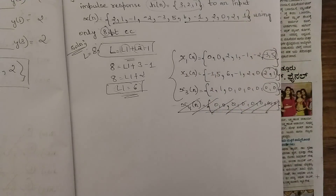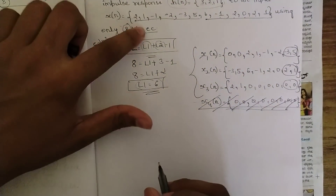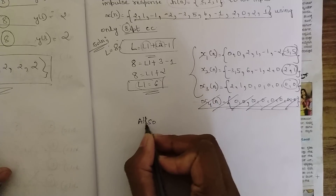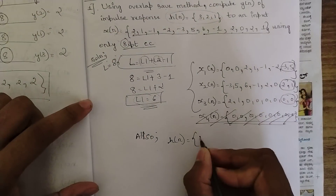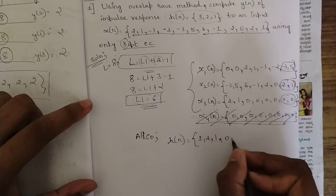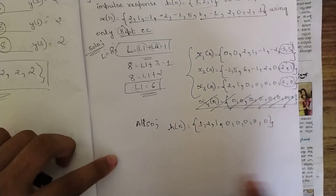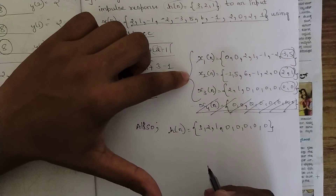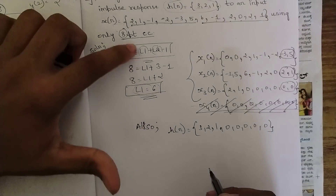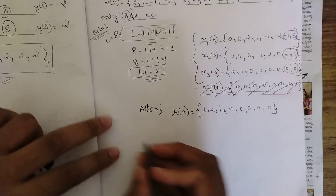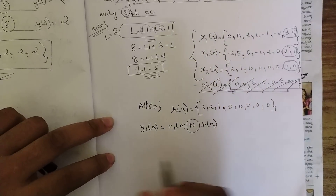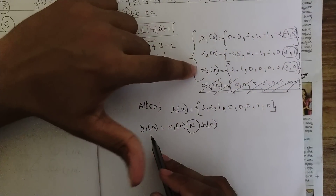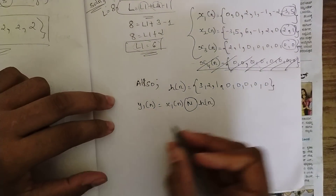The method is now clear. For the circular convolution we also need to pad h(n) to length eight: h(n) = {3, 2, 1, 0, 0, 0, 0, 0}. Now we find y1(n), y2(n), and y3(n) as the circular convolution of each xi(n) with h(n). So y1(n) = x1(n) ⊛ h(n), y2(n) = x2(n) ⊛ h(n), and y3(n) = x3(n) ⊛ h(n). Let us find y1(n) first using the matrix multiplication method.